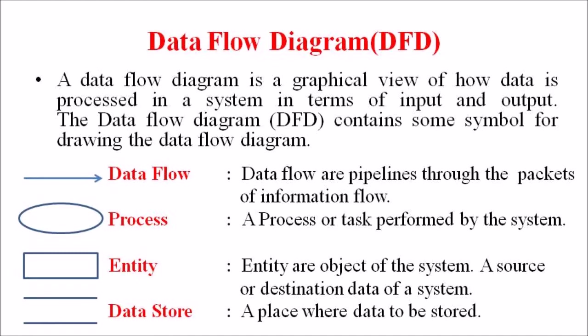A process or task is represented by an ellipse, whose duty is to perform tasks in a system. Entities are objects of the system — a source or destination of data in the system are represented by an entity, and in a data flow diagram this entity is represented by a rectangular box.